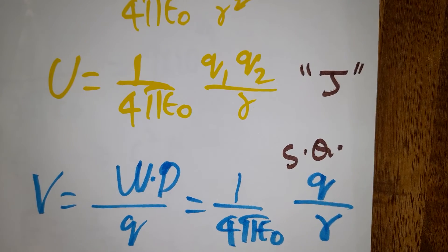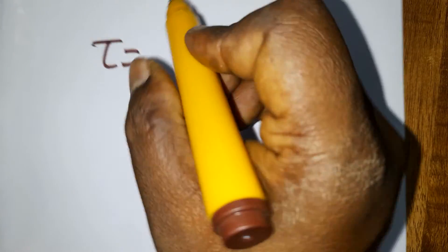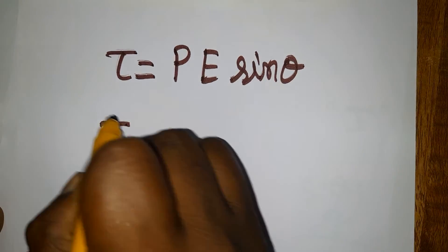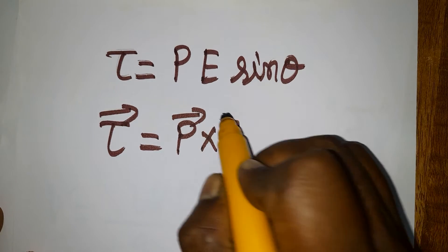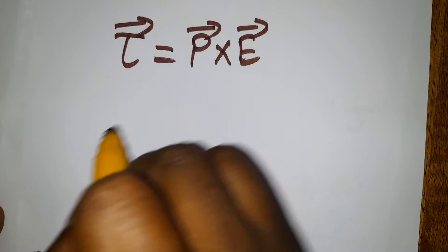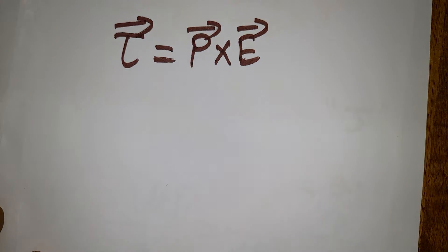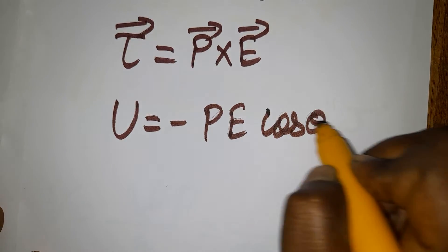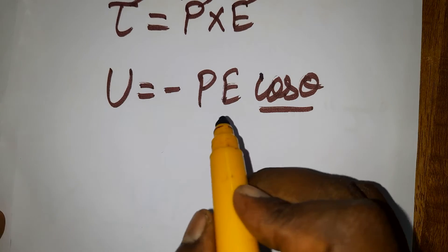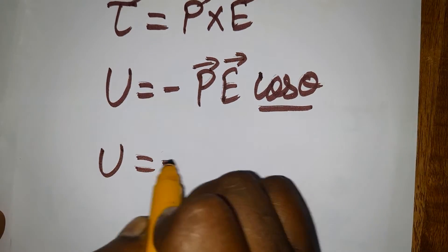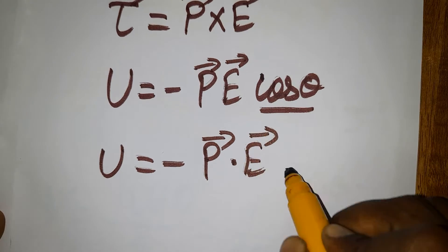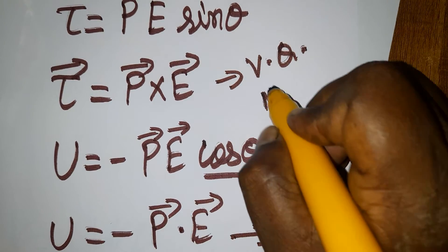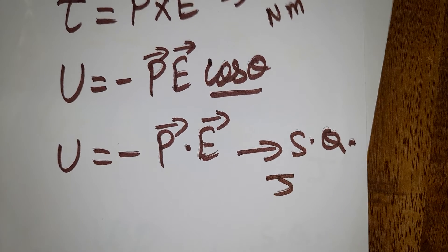Torque equals dipole moment times electric field times sine theta: τ = p × E (cross product). Wherever you get sine theta, that is a vector quantity — torque is a vector quantity. The electrostatic potential energy when a dipole is placed inside an electric field is U = −pE cosθ, written as p⃗ · E⃗ (dot product), so energy is a scalar quantity. Torque unit is newton-meter; energy unit is joules.